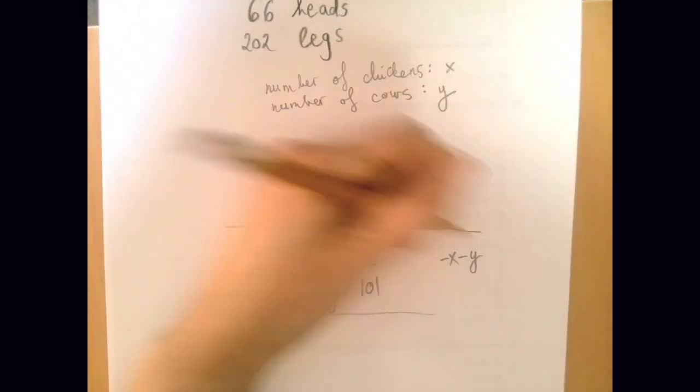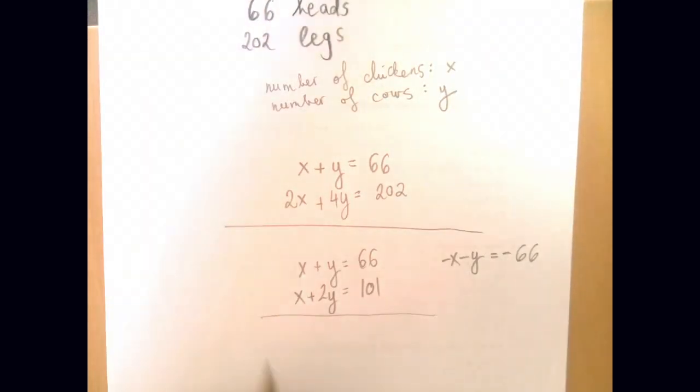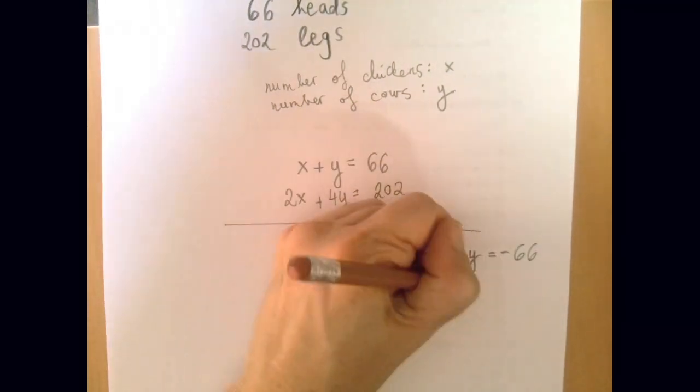I would always advise against mentally subtracting. Mentally add any time. So we multiply the first equation by negative 1, leave alone the second one.